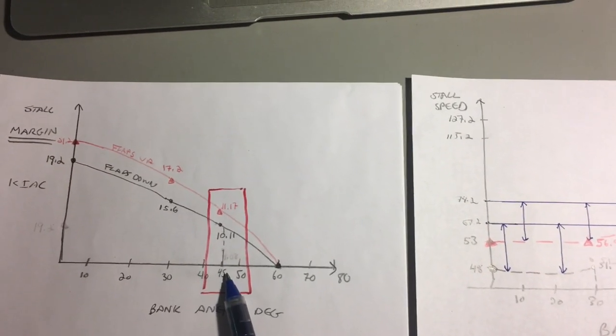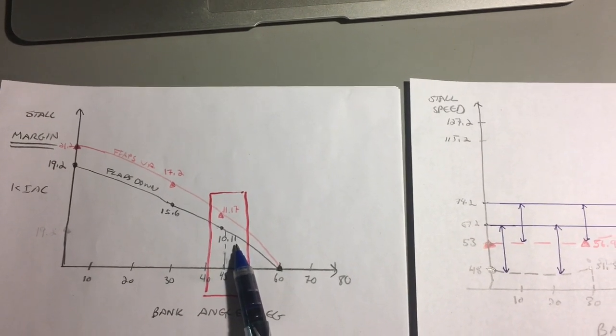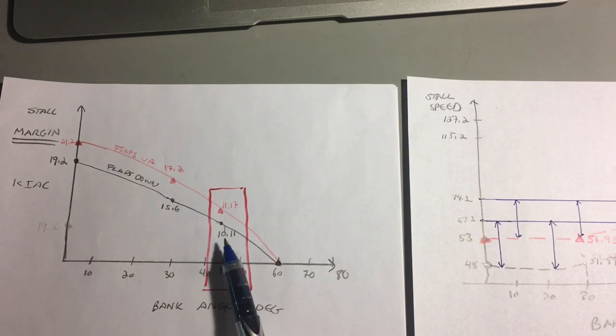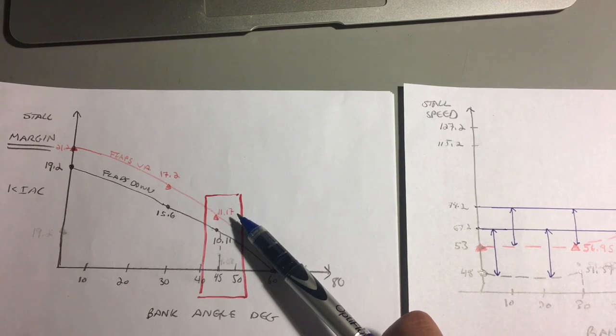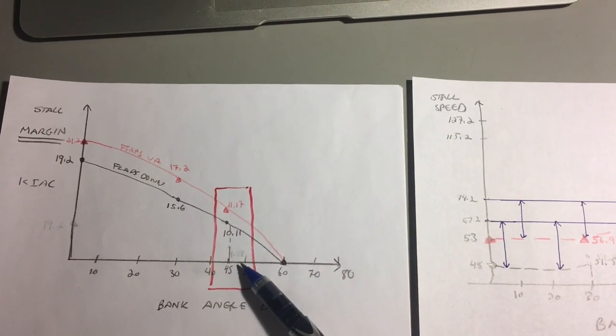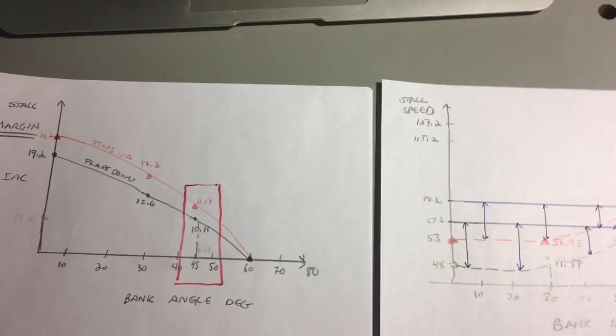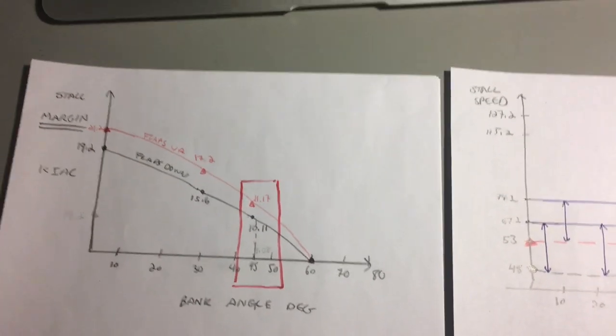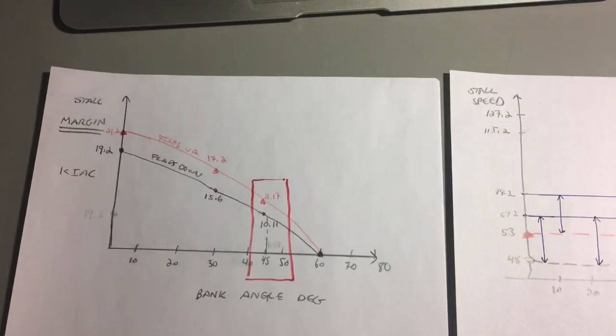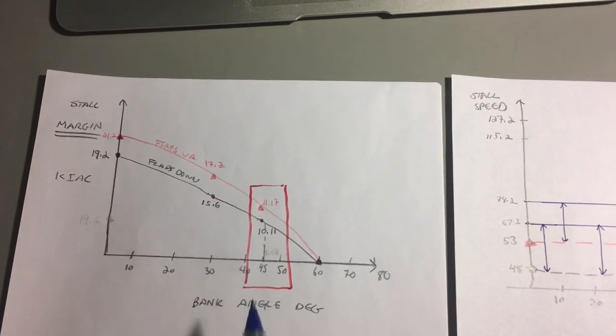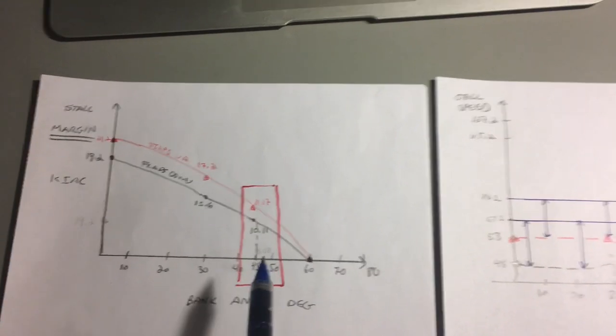At 45 degree bank angle with the flaps down we've got 10.11 knots of buffer from our approach speed before we stall, and we've got 11.17 knots we could lose with the flaps up before we stall. It should be perfectly within the capabilities of any licensed proficient pilot to maintain plus or minus 10 knots airspeed on approaching the pattern. In fact you should be able to do much better than that.